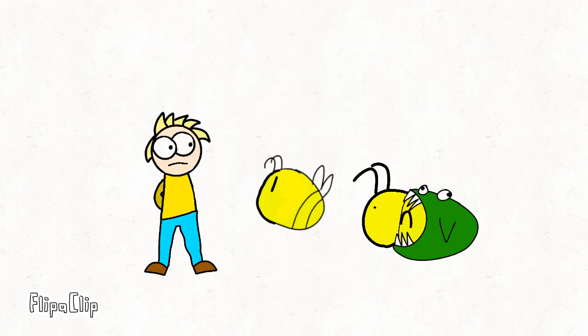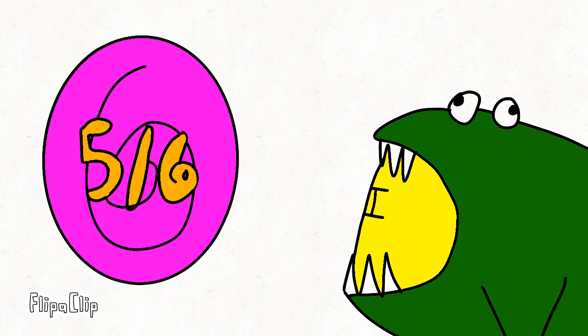In order to exit this universe, we have to jump through a portal. But wait, this portal says five out of six. What does that mean?